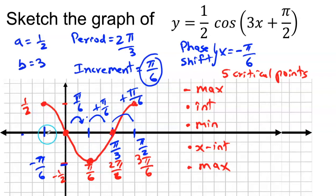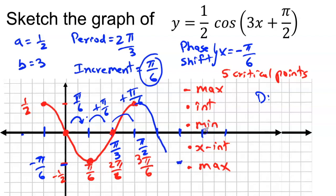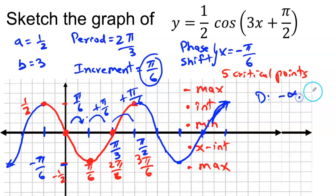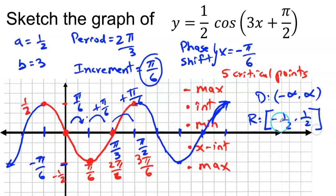Now let's do the domain and range. My domain: the graph continues to the right and to the left indefinitely, so the domain goes from negative infinity to positive infinity. For the range, look at the amplitude — the bottom is negative one half and the top is positive one half. So my range is from negative one half to one half, including both endpoints. Always look at the amplitude for the range: negative amplitude on the bottom, positive on top.